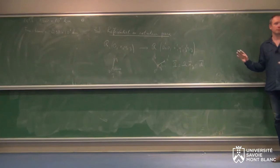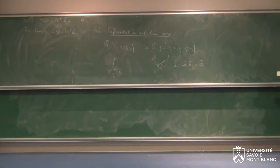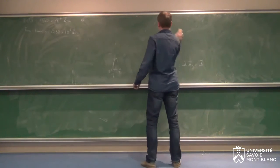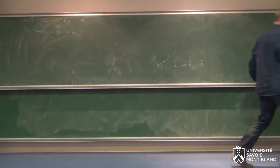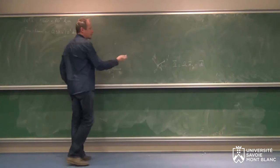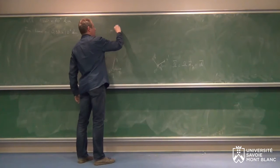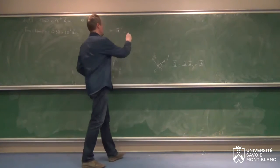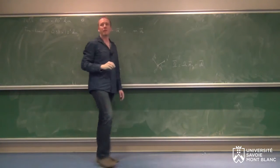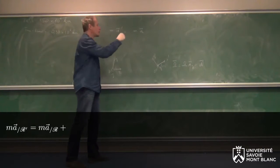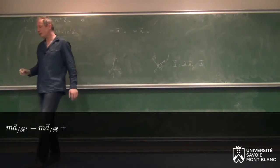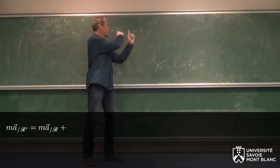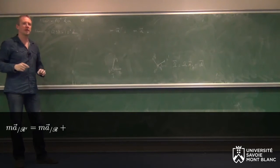Du point de vue du référentiel R', la personne qui fait de la physique dans ce référentiel tournant va écrire que MA' est égal à quelque chose. On va faire exactement la même chose que dans la partie précédente du cours : écrire la relation entre MA' et MA. Je vous invite à remplir ici la formule générale que vous avez dans votre cours, celle qui contient des vecteurs ω — il faut inverser les signes puisque j'ai passé ce terme de l'autre côté.